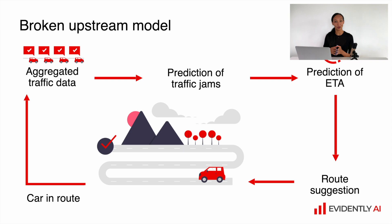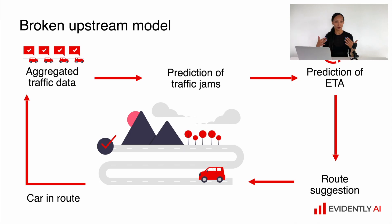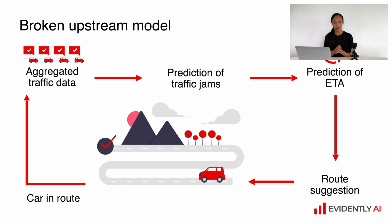Quite often we do not have only one model operating in production. It might be a chain of models where we use the output of the previous one as the input for the next ones. For example, if we try to build a system which implements road suggestions, we might use several models: the first one to predict traffic jams, the second one to predict the ETA, and the final one to recommend the road. And if something is wrong with the traffic jams model, then all the downstream models will suffer.